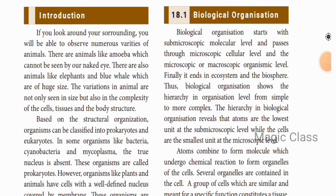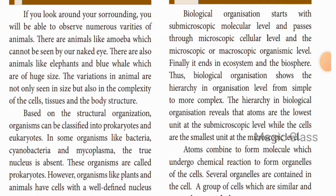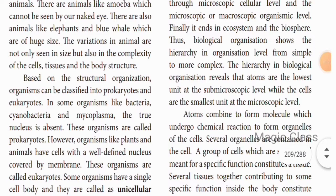Introduction: If you look around your surroundings, you will be able to observe numerous varieties of animals. Most of which you are able to see with your naked eye. But some animals and insects we are not able to see with our naked eye because they are too small — these are microscopic animals. There are animals like amoeba which cannot be seen with the naked eye, and also animals like elephant and blue whale which are of huge size. The variations in animals are not only seen in size but also in the complexity of cells, tissues, and body structure.